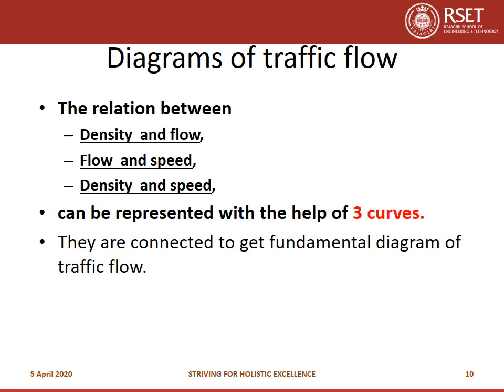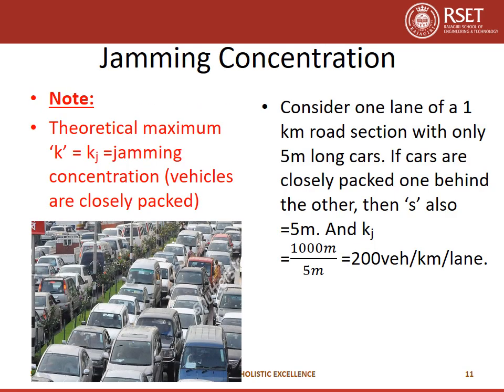Now we will see the diagrams showing the relation between each pair of these parameters on a given stretch of road: the curve showing relation between density and flow, another curve between flow and speed, and another between density and speed. These three curves are combined to give the fundamental diagram of traffic flow. Before going into detail, let us understand the meaning of jamming concentration. Concentration is another word for density, and as the name indicates, it refers to a jamming condition on the road where all vehicles are closely packed.